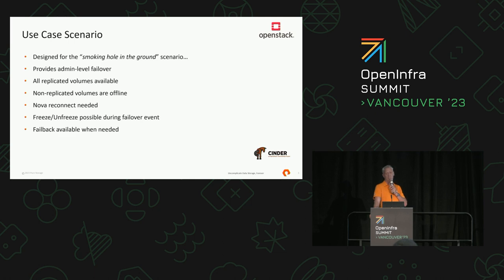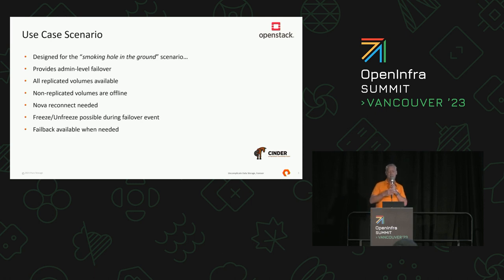If you have volumes that have not been replicated, then those become unavailable. There's no way Cinder can do anything with a volume that's in a smoking hole in the ground. One thing that has been added after the initial incarnation of replication is the ability for the admin to freeze and unfreeze that back-end. So if you're in a failover scenario and you've got your replicated volumes on your second array and you know you're going to bring your first array back up, you want to stop people doing snapshots on that remote array, because snapshots can't be brought back when you do a failback.